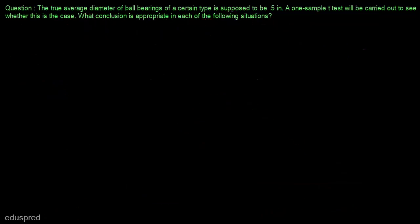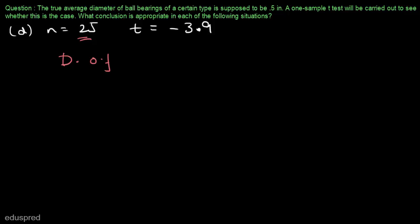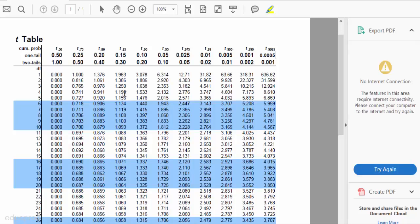Now let's move to part D. In part D, we are given that n is equal to 25 and the value of t is equal to minus 3.9. We are not given the value of alpha in this case. Because we are not given the value of alpha, we cannot find the t-critical value and we cannot find the rejection region. Let's see what information we have and take the help of the t-table. The degree of freedom is equal to 25 minus 1, which is equal to 24.